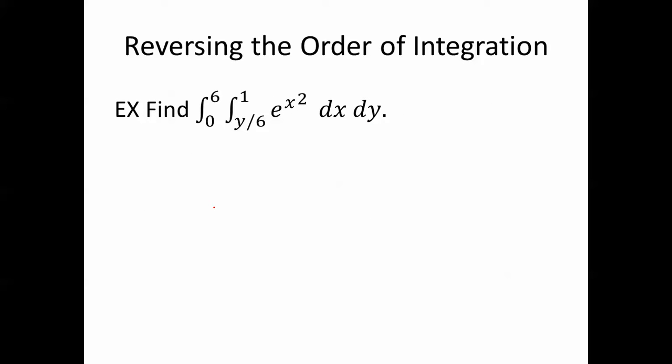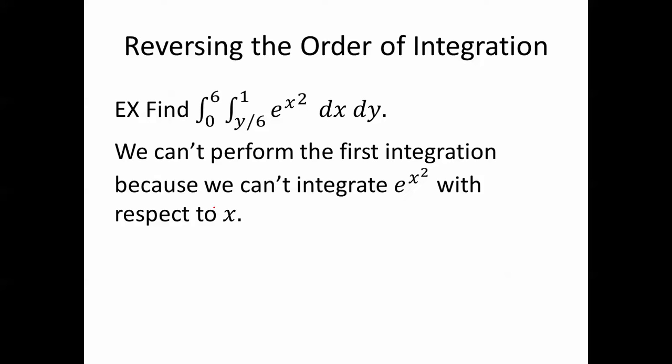Here's an example. Find the integral from 0 to 6, y over 6 to 1 of e to the x squared dx dy. We can't perform the first integration because we can't integrate e to the x squared with respect to x. This is impossible. We never really do learn a way to exactly evaluate something like that.